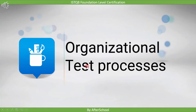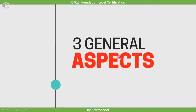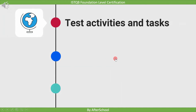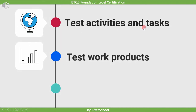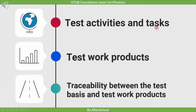Before we start with the test process, let's have an overview of what we will be seeing in upcoming videos. There are three general aspects of organizational test processes: first aspect is test activity and task, second aspect is test work product, and third aspect is traceability. Let's understand what they mean.